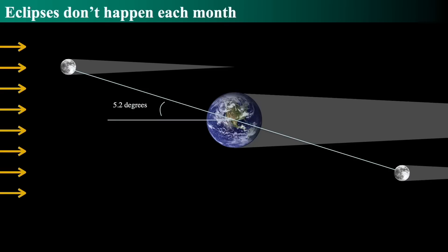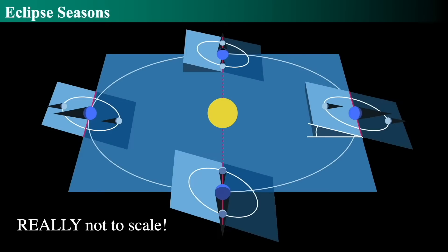There will be no eclipse at that time. These are called eclipse seasons, and this diagram is not to scale. There's a time of year during which solar and lunar eclipses are possible. Lunar eclipses don't occur at every full moon, and solar eclipses don't occur at every new moon — again because the moon's orbit is tilted 5 degrees with respect to the Earth's orbit.